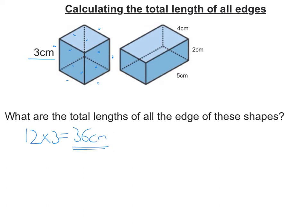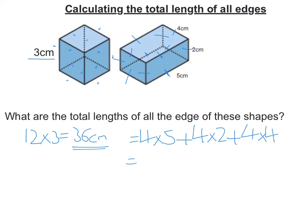For the cuboid it's a bit different. I have four edges that are length five, so four times five. I have four edges that go up and down which have length two, and then four edges that have a length of four. So four times five is twenty, four times two is eight, and four times four is sixteen.